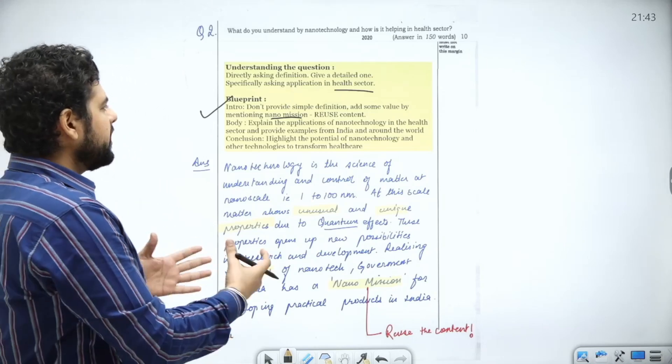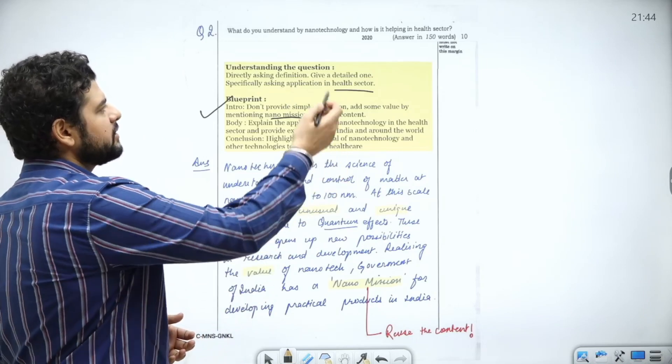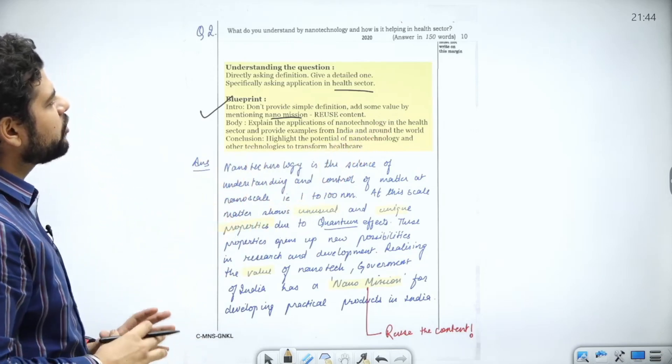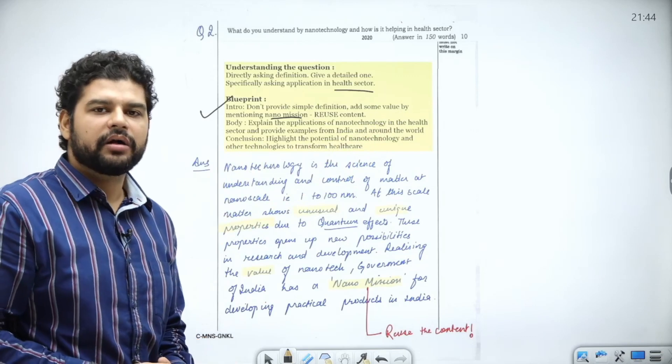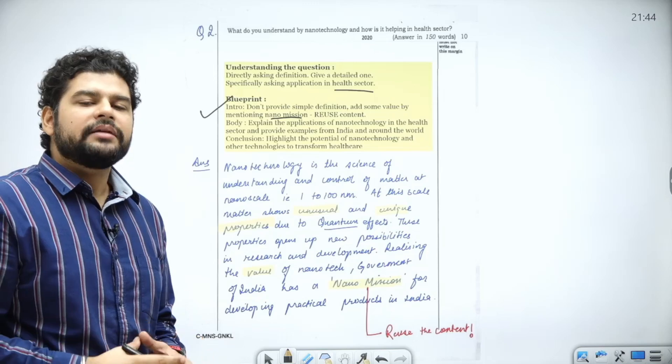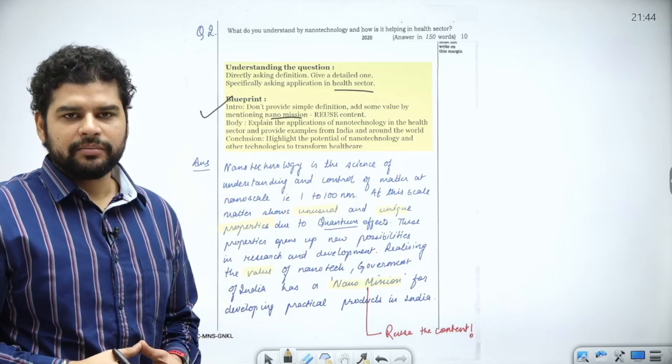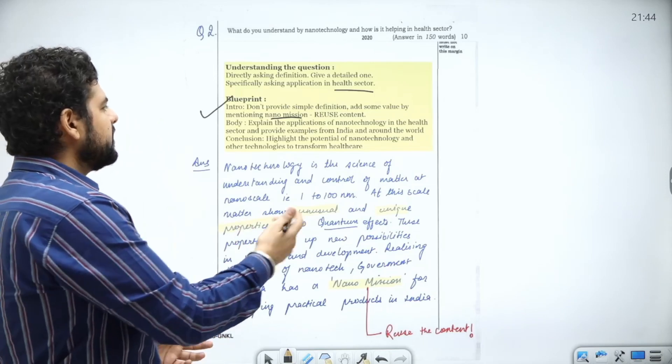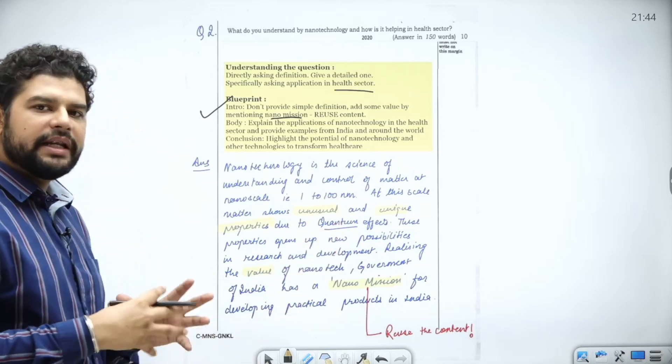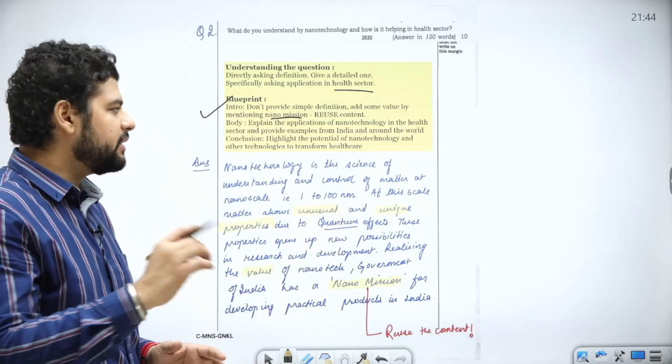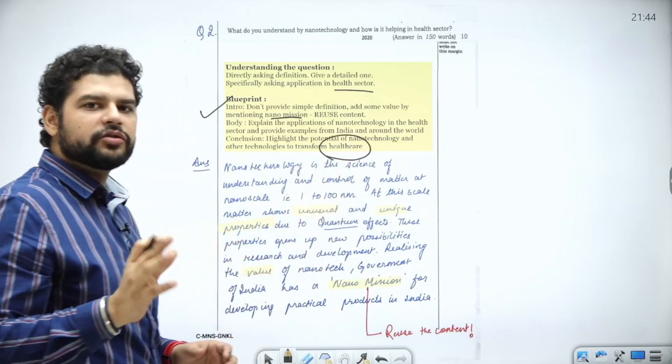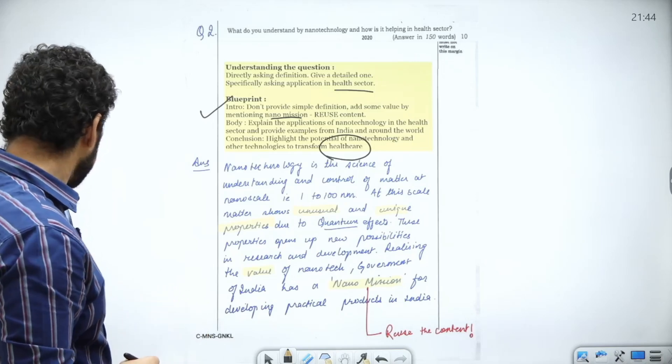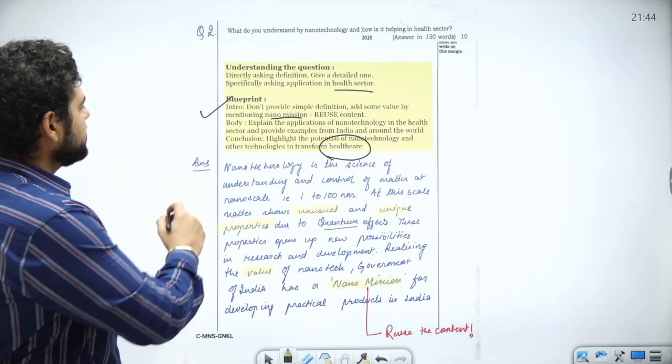In the body, please explain the applications because it is asking about health sector applications. Since the question is not mentioning India or international arena, you can use international examples also, but try to focus on India. In the conclusion, highlight the potential and link it with other technologies to transform healthcare. Keep the answer targeted to the main keyword.